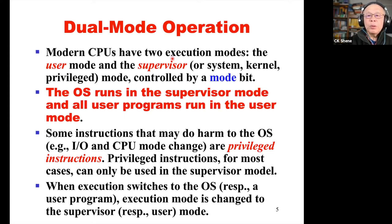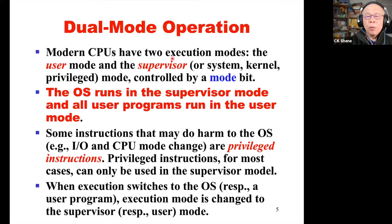If the CPU is in user mode, the mode bit is set to 1. Some early IBM mainframes had at least four mode bits, meaning we have 16 combinations. 0-0-0-0 means supervisor mode; all the remaining values indicate user mode. So we could run 15 user programs plus the operating system.